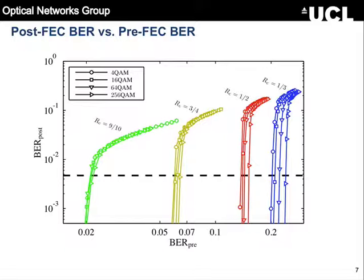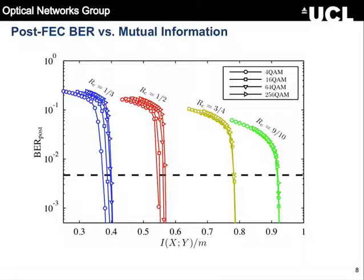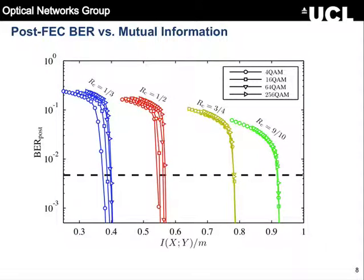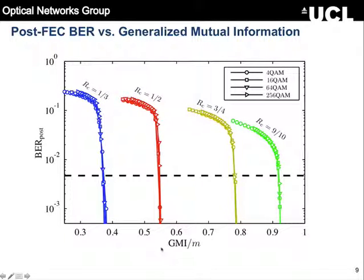We're also saying that you can do better at predicting this, and we studied two quantities. One is the mutual information — an information-theoretic quantity that tells you something about the largest achievable rates. The second is the generalized mutual information, GMI, which is another, perhaps newer, information-theoretic quantity. Both can be easily calculated in a simulation or in an experiment. Pre-FEC doesn't work. What happens if you use mutual information instead? The curves get a little bit better — they get closer together — but it's still not fully correct. If you use GMI, however, you see that regardless of the coding rate and regardless of the modulation format, you get a match. By looking at GMI, it's enough to predict post-FEC BR. You shouldn't be looking at pre-FEC or mutual information — you should be looking at generalized mutual information.